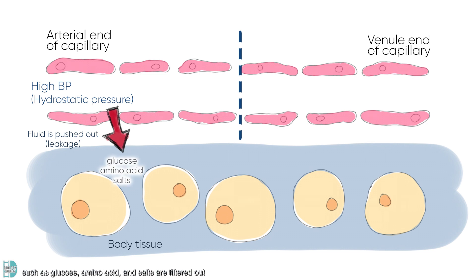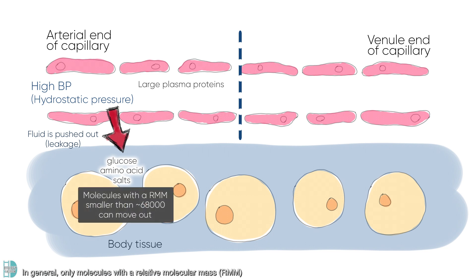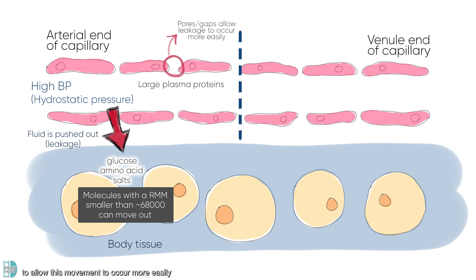Small molecules and ions such as glucose, amino acids, and salts are filtered out, while large plasma proteins are not. In general, only molecules with a relative molecular mass smaller than 68,000 can move through. There are pores between the endothelial cells to allow this movement to occur more easily.